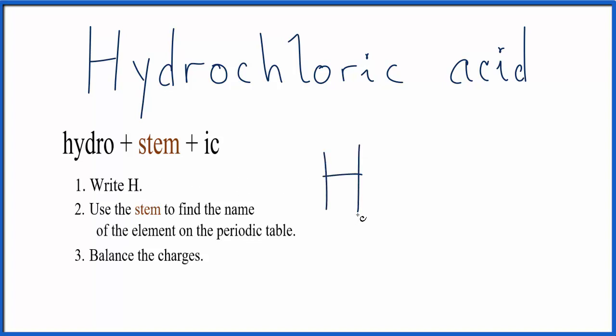And that's what makes it an acid. Then we'll use the stem to find the name of the element on the periodic table. The stem here is C-H-L-O-R. When I look that up, that's chlorine, which is Cl.